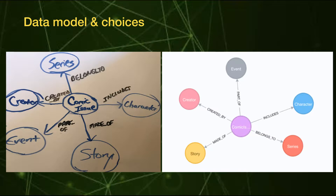If you're relatively new to Graph, we had to figure out how we wanted the data pulled from REST endpoints to look in a graph. We came up with comic issue as the central connecting node to everything else. We could have focused on character or creator, but we chose comic issue as what we care about, relating all other nodes to that single entity.